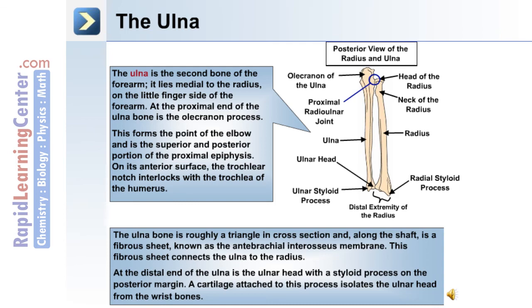The ulna bone is roughly triangular in cross-section. Along the shaft is a fiber sheet known as the antibrachial interosseous membrane, which connects the ulna to the radius. At the distal end of the ulna is the ulnar head, with a styloid process on its posterior margin. A cartilage attached to this process isolates the ulnar head from the wrist bones.